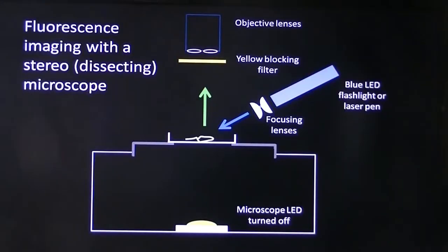Here's a diagram to show the basic illumination system. You can use a blue LED flashlight or torch, or a laser pen, but there are safety issues and I'll cover that in a separate video. We shine blue light onto the sample and then have a yellow blocking filter in front of our objective lens.